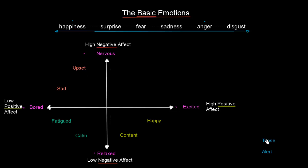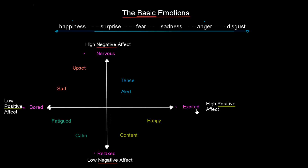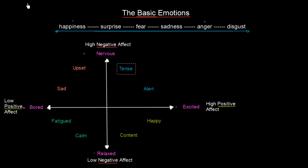Finally, we have tense and alert. Alert is close to excited — when something starts to have a negative effect on you, you become alert. So alert is placed near excited, and tense is placed just beside it. Now we've constructed the full structure of mood: something can have a positive or negative effect, and it depends on whether that effect is high or low. You can see our final mood map — it's a nice continuum.